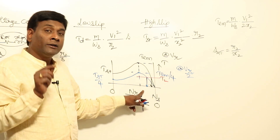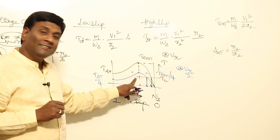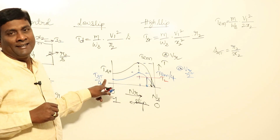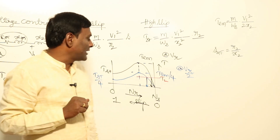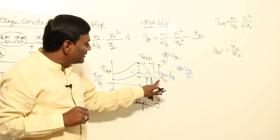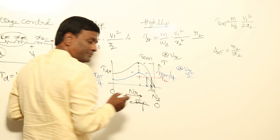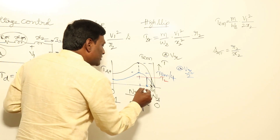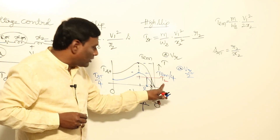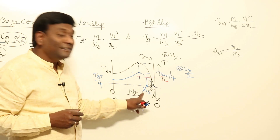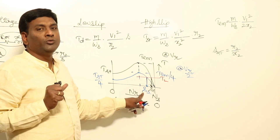Speed can be controlled by varying voltage. But normally we don't prefer it, because pull-out torque and starting torque are getting reduced. For a given torque, slip is increased, meaning speed can be reduced. Black is S1 and blue is S2 — slip increases from S1 to S2 for the same torque.